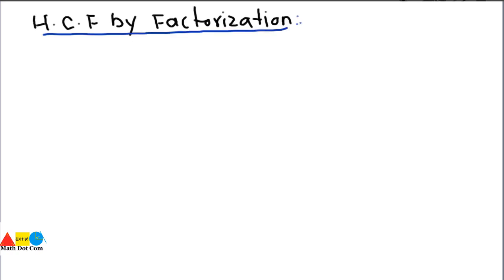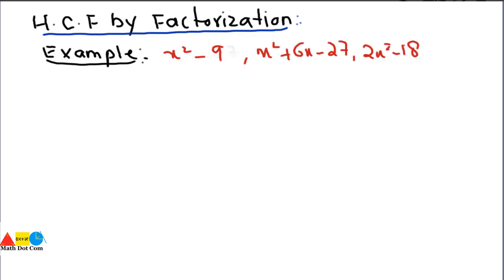First, we will see how you can find the HCF by factorization. We will take an example so you can understand how to apply it. These are three algebraic expressions whose HCF we are going to find. We will find the factors of each expression one by one using different factorization methods, which we have already discussed.